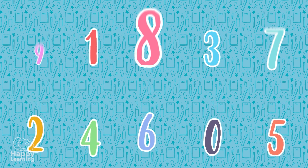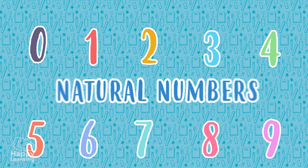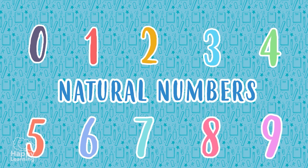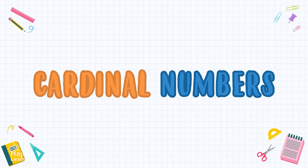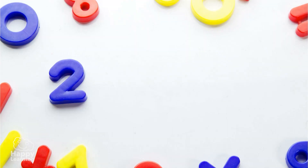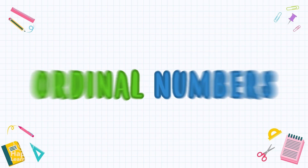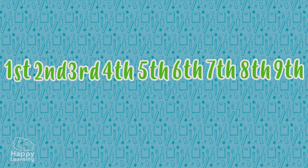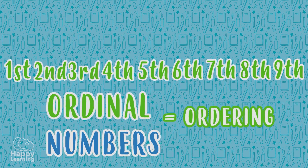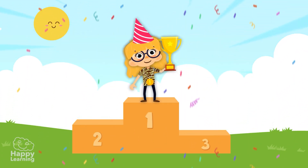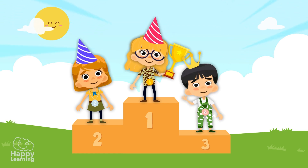Now let's review. Natural numbers are all numbers, and depending on how we use them, they can be cardinal or ordinal. Cardinal numbers are the ones we use for counting and for doing mathematical operations — they give us quantities. Ordinal numbers are the ones we use to order or to indicate the position of an element within a group — they are used for ordering.